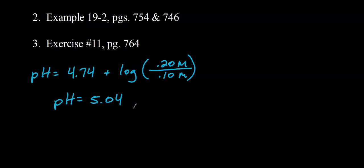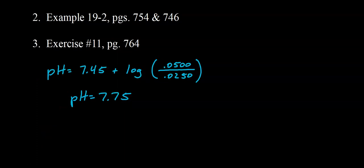For problem 11 on page 764, let's use Henderson-Hasselbalch instead of Ka. Using the pKa value from the back of the book, pKa = 7.45. Make sure you put the concentrations in the right places — conjugate base over concentration of acid — and we get a pH of 7.75.